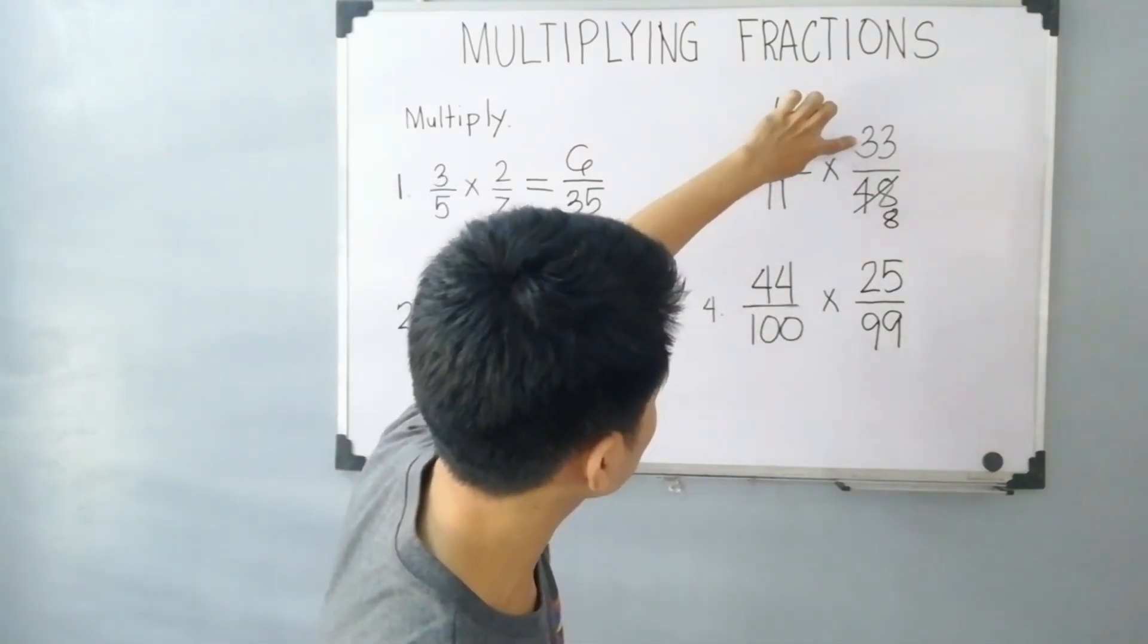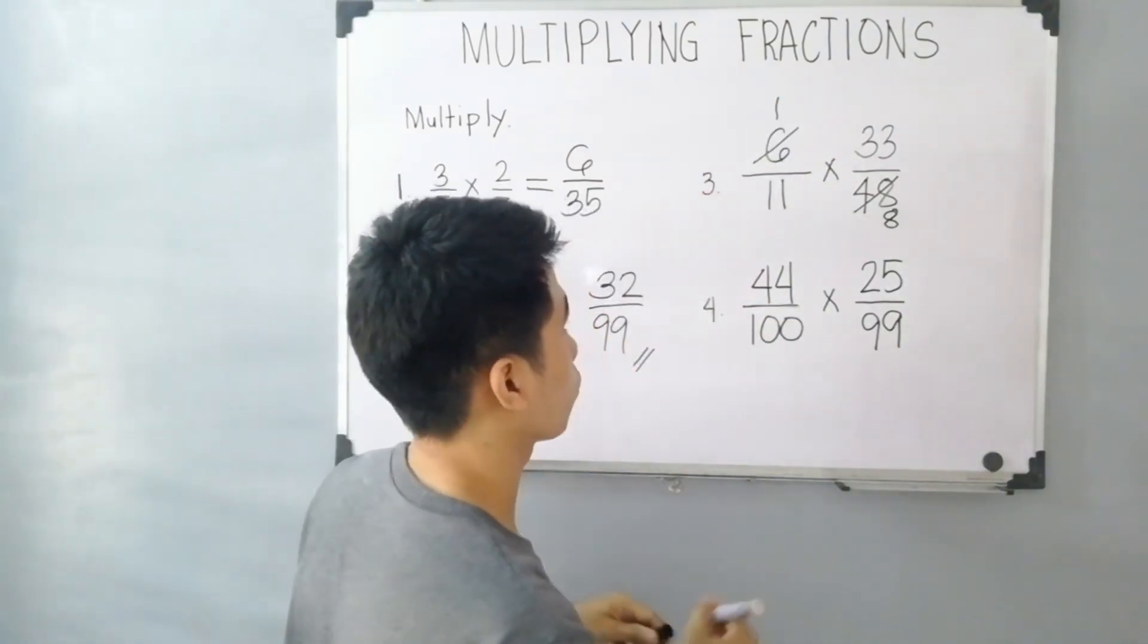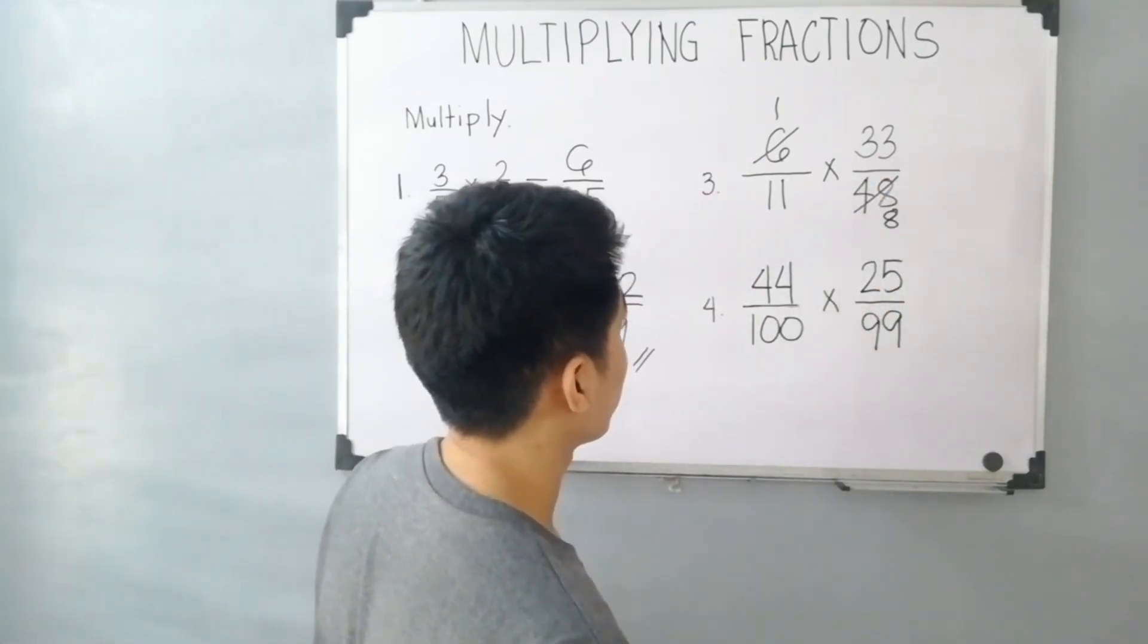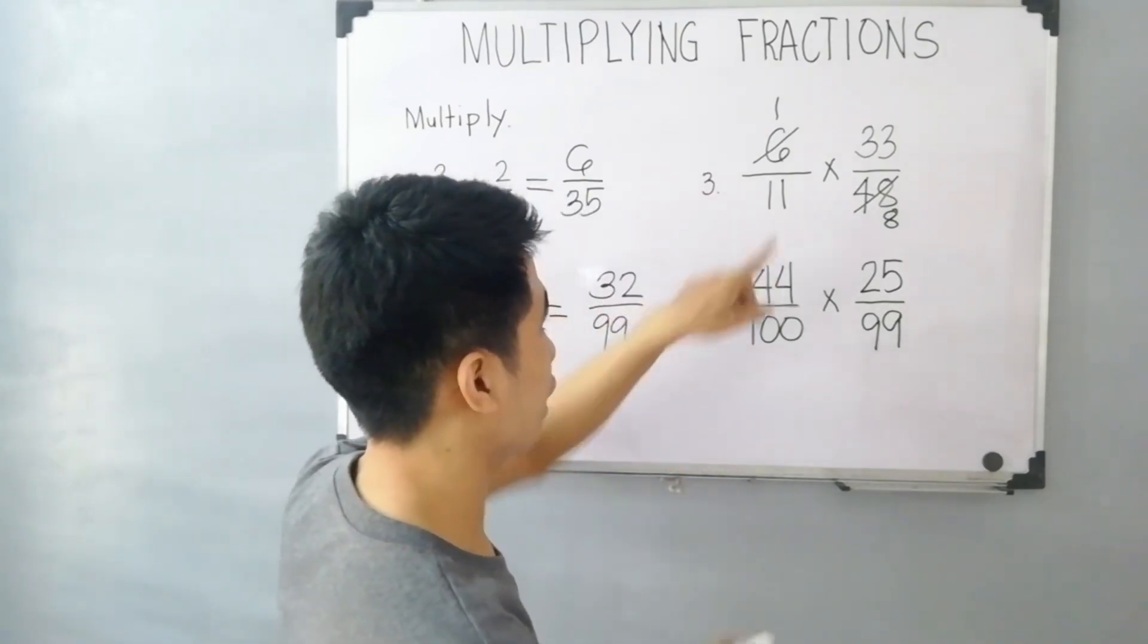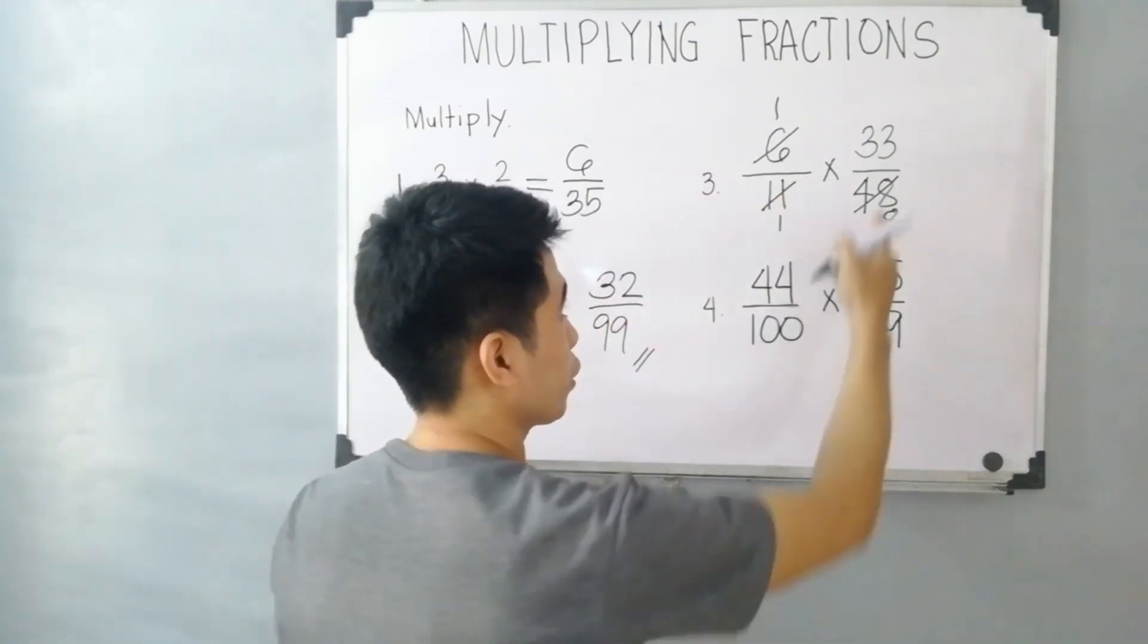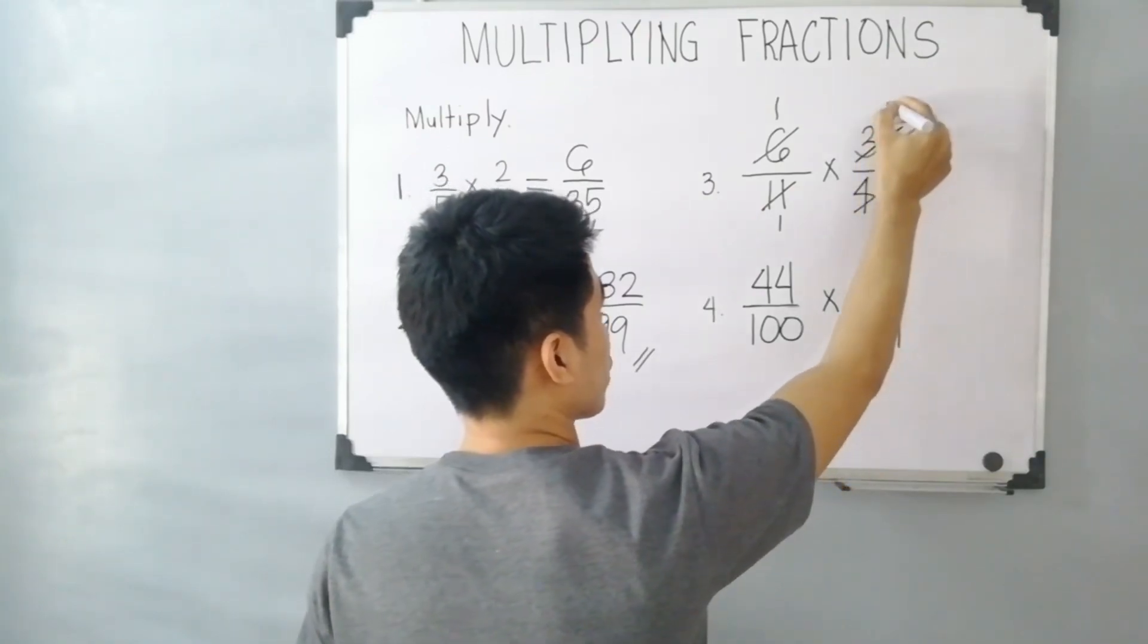Another one, 33. It can simplify to 11, since 11 and 33 are divisible by 11. Let's divide 11 by 11, that is equal to 1. And 33 divided by 11, this is 3.